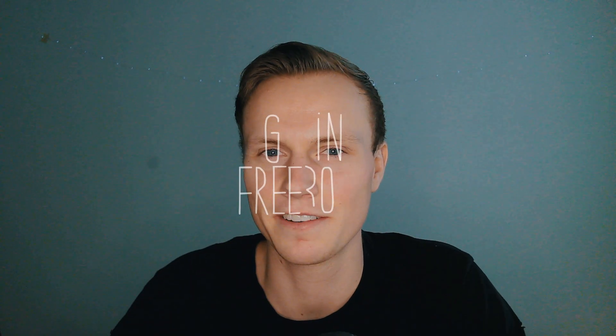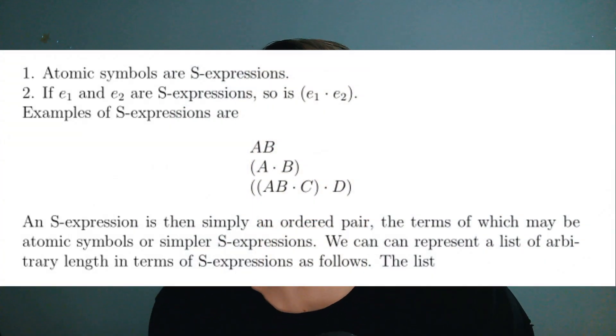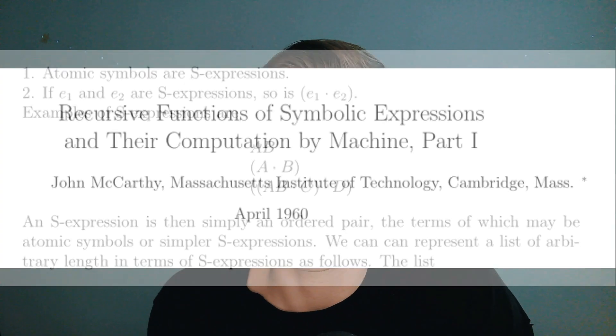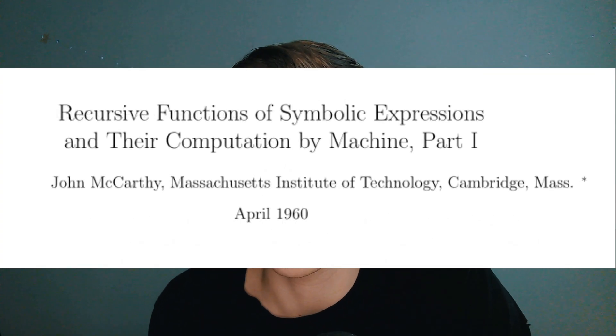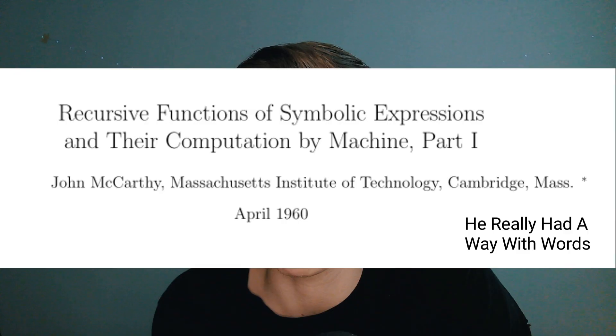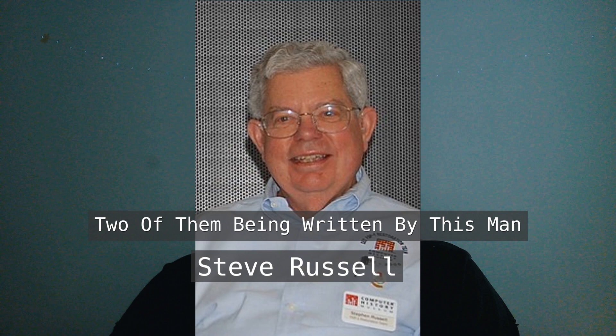Let's step back in time to 1958, when John McCarthy at MIT began developing the first iteration of Lisp. Lisp was first described by McCarthy in the paper "Recursive Functions of Symbolic Expressions and Their Computation by Machine, Part 1." In the paper, McCarthy discusses recursion, symbolic expressions, and many of the other core functions and features of Lisp. Shortly after, the first implementation of this language began development, and it continued to develop into the 1960s.